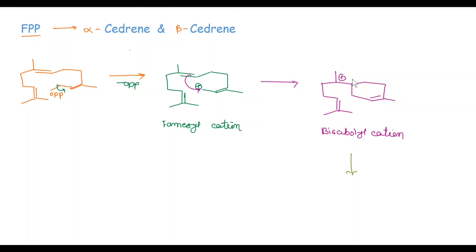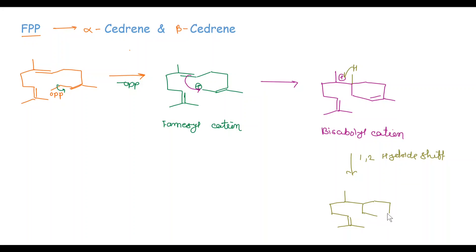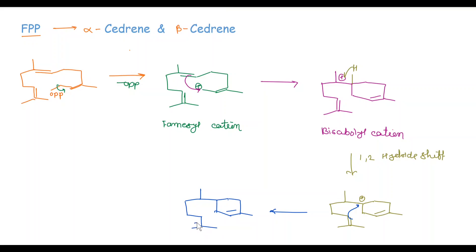In the next step, a 1,2-hydride shift takes place from this carbocation, and we get here a new positive charge. In the next step, this double bond attacks on this carbocation, and we get here a positive charge and here a new carbon-carbon bond. In the next step, a 1,2-hydride shift takes place from this carbocation, and we get here a positive charge.